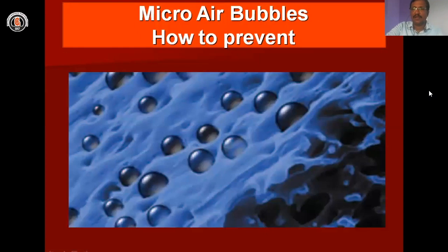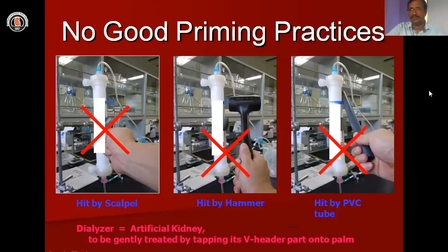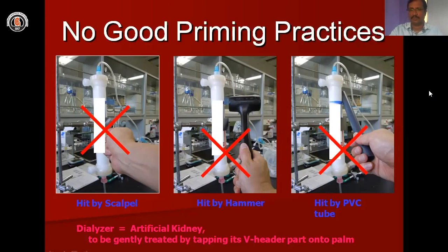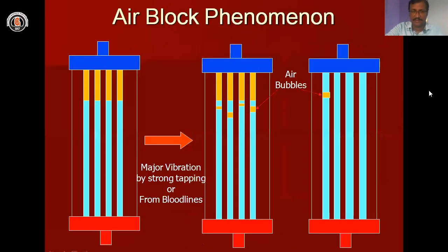How do micro air bubbles form and how do we prevent them? Most of the time, when people see air during priming, they tap the dialyzer with their hand or some object. Tapping the dialyzer actually causes more and more air bubbles to form. We should not tap the cartridge or filter during priming — only tube compression can be done. The air block happens when your flow rate exceeds the safe range of 100 to 150 ml per minute; at high speeds these blocks may occur.